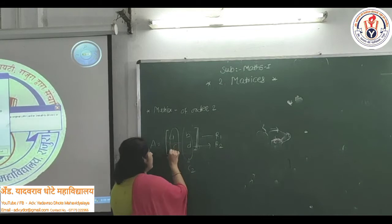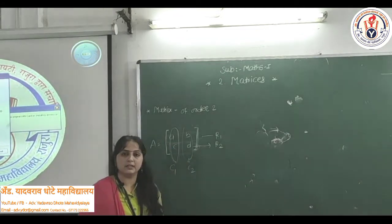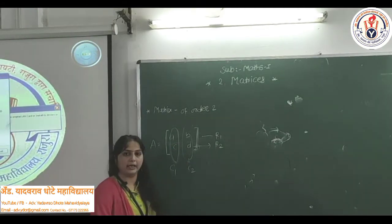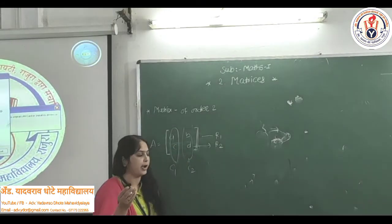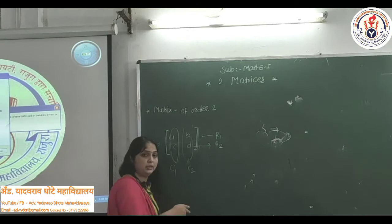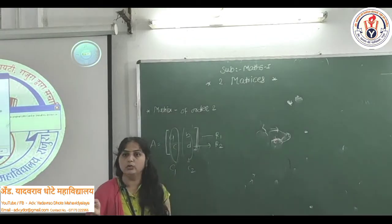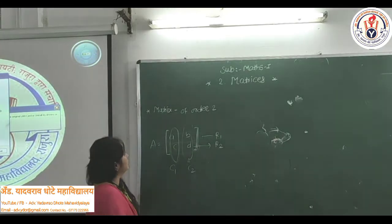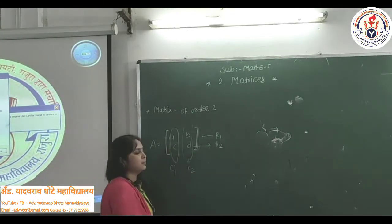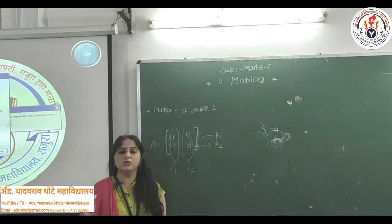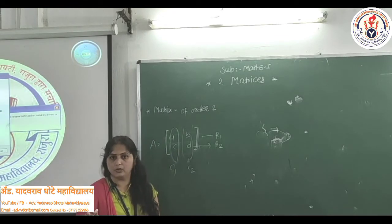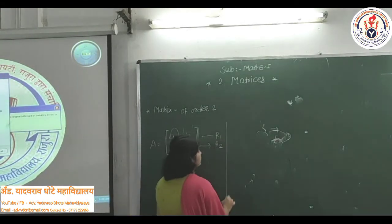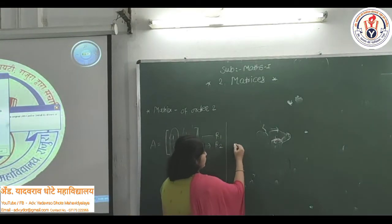So in this matrix, the number of rows is 2 and the number of columns is 2. Therefore, we can write that the order of this matrix is 2 by 2.